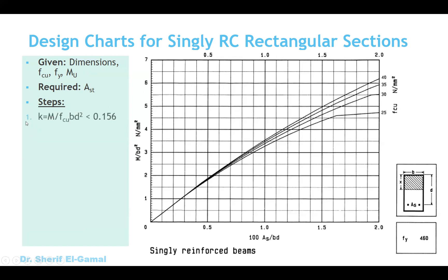The first step is to calculate K, which is M over FCU·BD squared. This K should be less than 0.156. If it is less than 0.156, we have a singly reinforced rectangular section. However, if the value is greater than 0.156, we will need a doubly reinforced rectangular section, and therefore we should go to the other type of charts where we have compression steel. If it is less than 0.156, the singly reinforced charts are suitable.